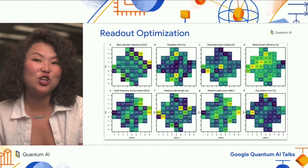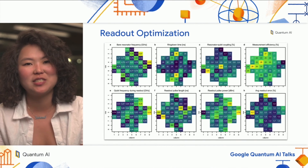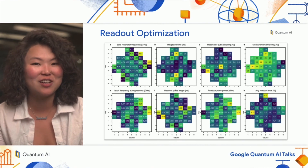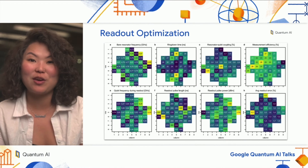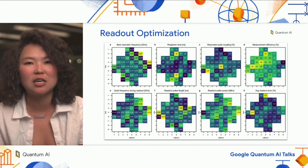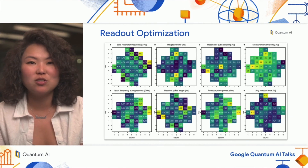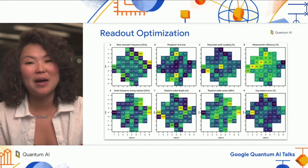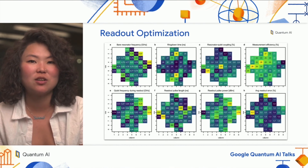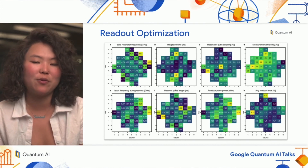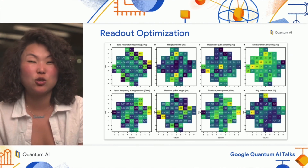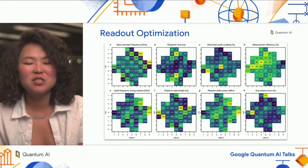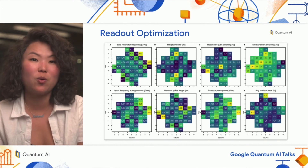Similar to gate optimization, we can optimize readout parameters independently from gate frequencies by calibrating various readout-related parameters. Shown here are parameters like the resonator ring-down time, qubit-resonator couplings, and measurement efficiency. Feeding these into models for different readout error mechanisms, we optimize the qubit frequency during readout, the readout pulse length, and power individually for each qubit using the snake optimizer. We model errors from finite SNR, qubit relaxation during readout, potential swapping with neighboring qubits, and qubit state transitions induced by the resonator drive. This optimization was essential to our surface code work, where we required fast mid-circuit measurement.